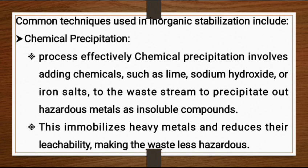In chemical precipitation, chemicals such as lime, sodium hydroxide, or iron salts are used to precipitate hazardous metals out of waste as insoluble compounds. This immobilizes heavy metals and reduces the leachability, making the waste less hazardous.